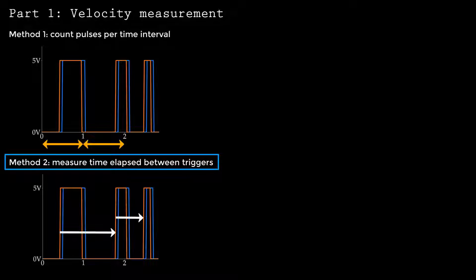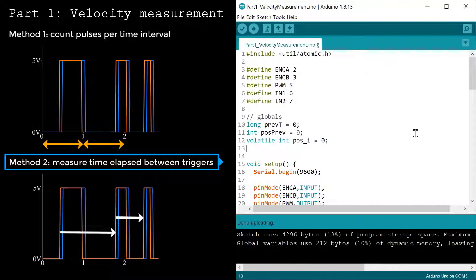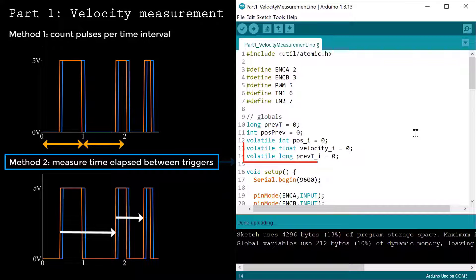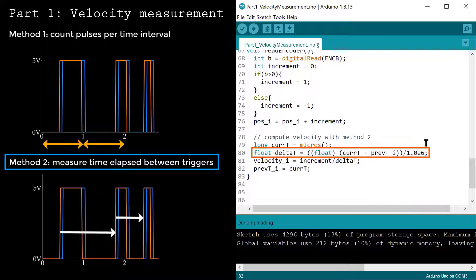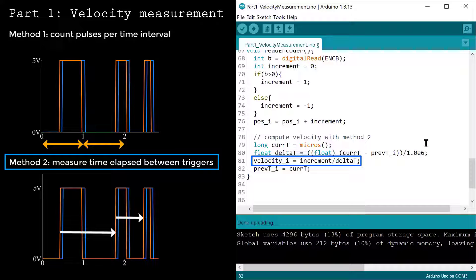In the second method, we'll estimate the elapsed time inside the interrupt function. First, I'll define global storage variables. I'll call micros inside the interrupt to measure the current time. The elapsed time is the difference between the current time and the previous interrupt time. So, the estimated speed is plus or minus 1 divided by the elapsed time.